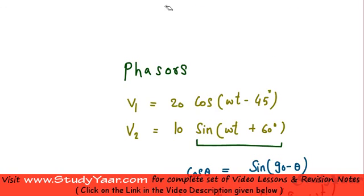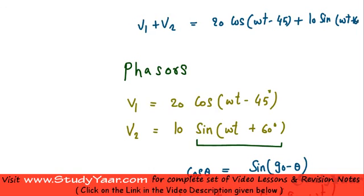In order to add them, I have to use my trigonometry. So basically what you want to do is, you want to get your V1 + V2, which is going to be equal to 20 cos(ωt - 45°) + 10 sin(ωt + 60°).